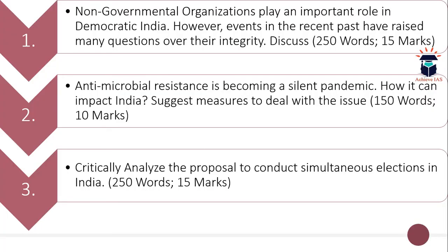The first question is: Non-governmental organizations play an important role in democratic India; however, events in the recent past have raised many questions over their integrity — discuss. Here you have to discuss the role of NGOs and what events have questioned their integrity in the recent past. The word limit is 250 and the maximum marks are 15.